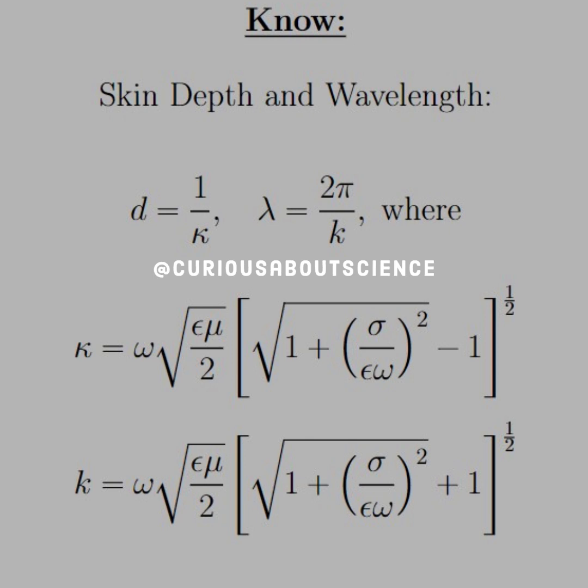Here, the skin depth and wavelength, d is equal to 1 over kappa, lambda is equal to 2 pi over k, where kappa and k are listed below. Notice that they're pretty much the same outside of the negative 1 and positive 1, respectively.